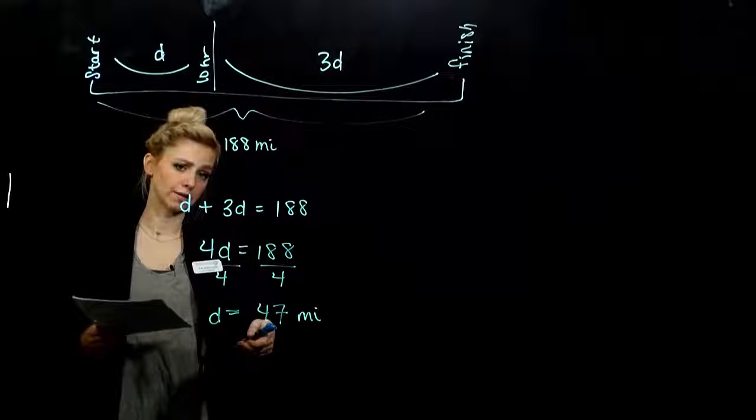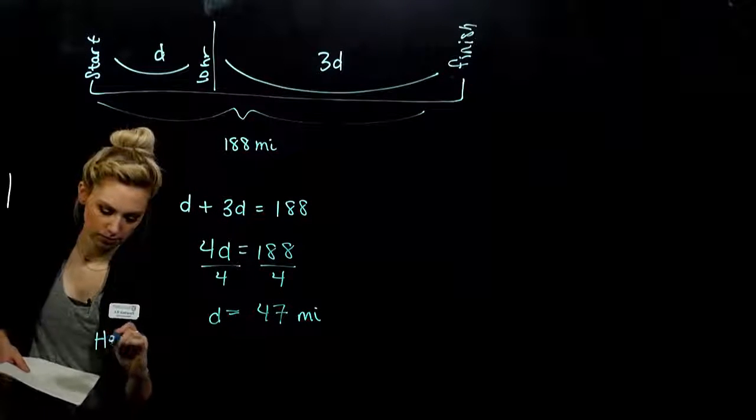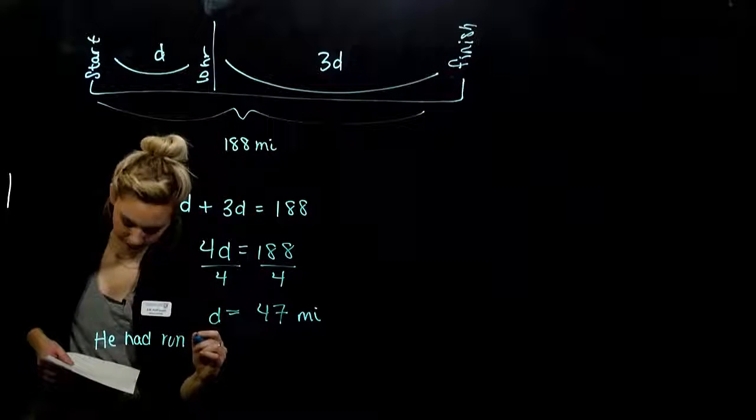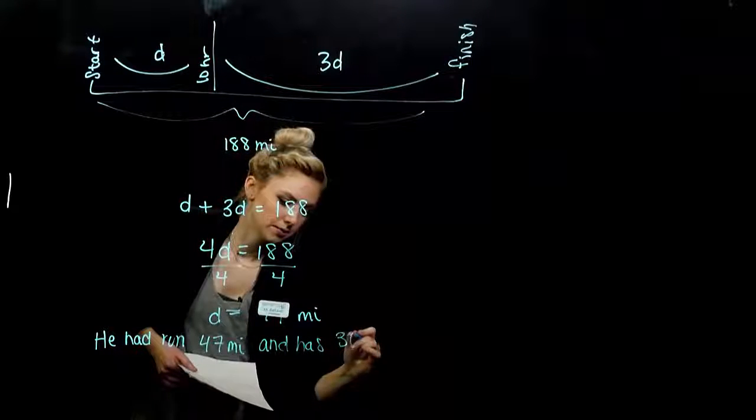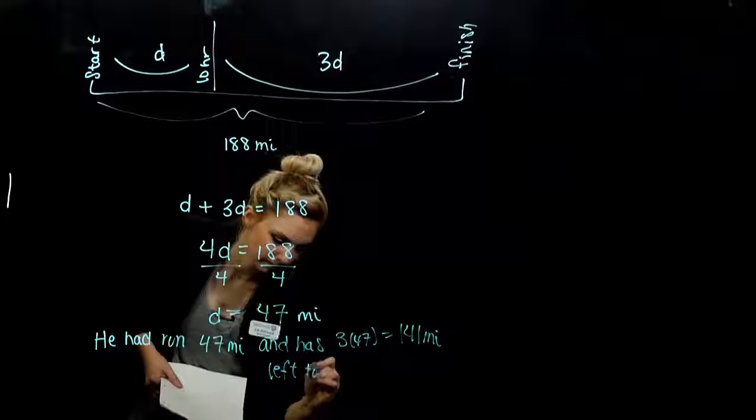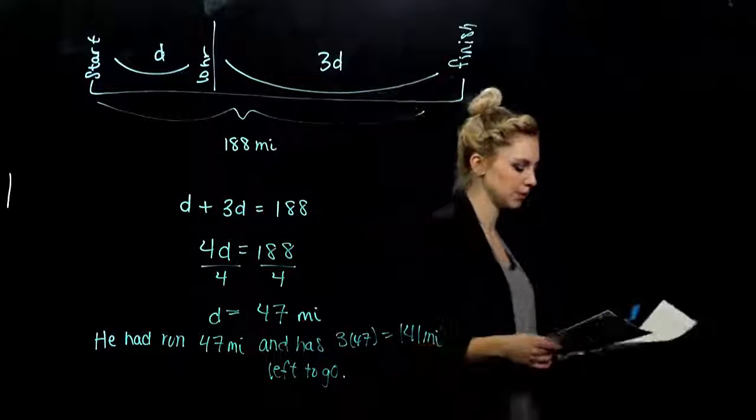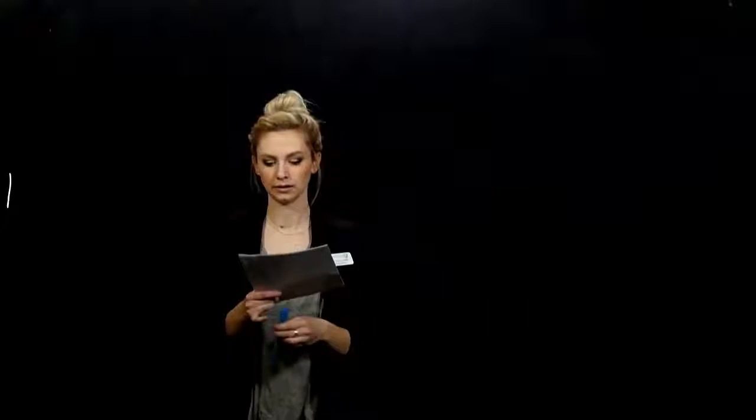And how much longer did he have left to go? They didn't ask us for it, but we can answer that question. Three times 47. So he had run 47 miles, and has three times 47, which is 141 miles left to go. Drawing a picture helps so much with these kinds of problems. It breaks it down and helps you visualize what's going on.